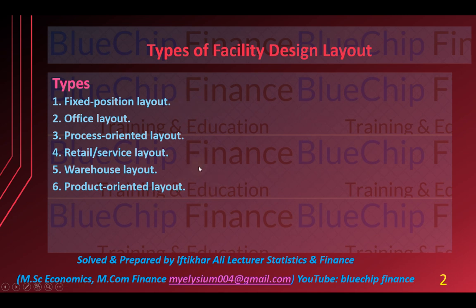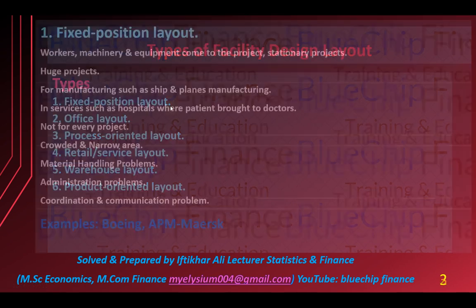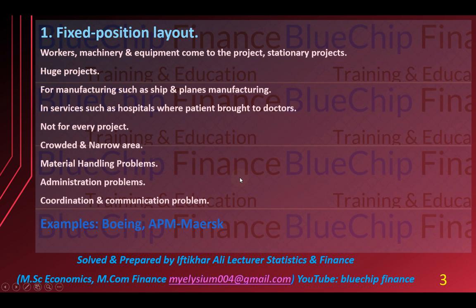One by one, first we are going to discuss fixed position layout. Fixed position layout ke andar jo projects hain wo stationary hote hain — yani ke tamam machinery, workers, equipment wo projects ke paas le ke aye jate hain; projects ko unki taraf nahi le ke jaya jata. Aur ye normally jo huge projects hote hain unke andar is type ka layout use kiya jata hai.